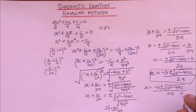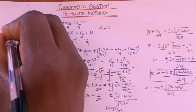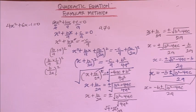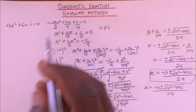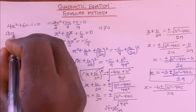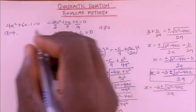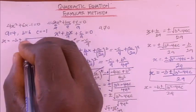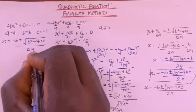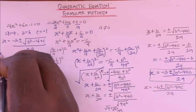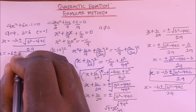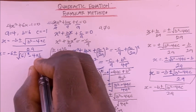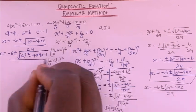Let's use it to solve one question. Suppose we are asked to find the roots of 4x² + 6x − 1 = 0. Comparing with ax² + bx + c = 0, we identify a = 4, b = 6, and c = −1. Recalling the quadratic formula x = (−b ± √(b² − 4ac)) / 2a, I'll now substitute these values.